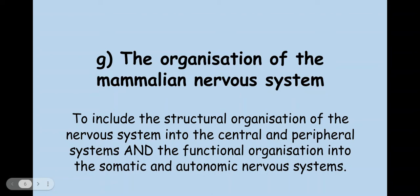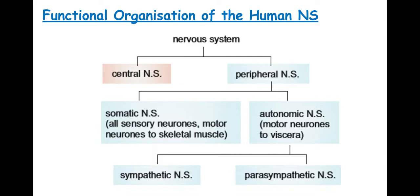Welcome biologists to this session where we're going to look at the organisation of the mammalian nervous system. The nervous system is split into the central nervous system and the peripheral nervous system. The peripheral nervous system is split into the somatic and autonomic, and the autonomic nervous system is split into the sympathetic and the parasympathetic. There are certain characteristics of each of these nervous systems that we need to be aware of.